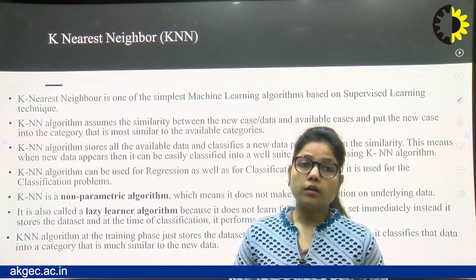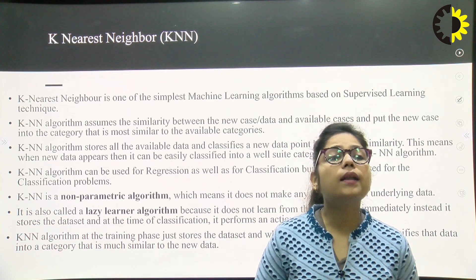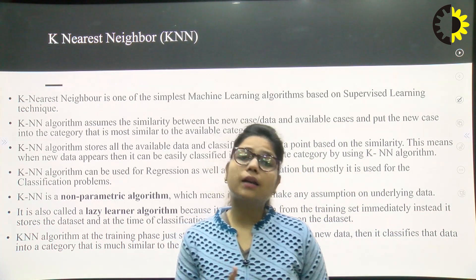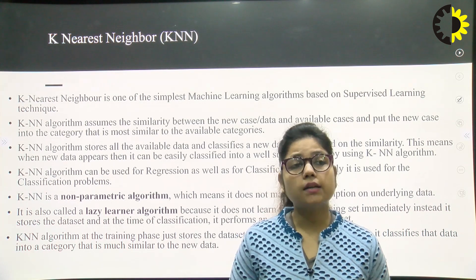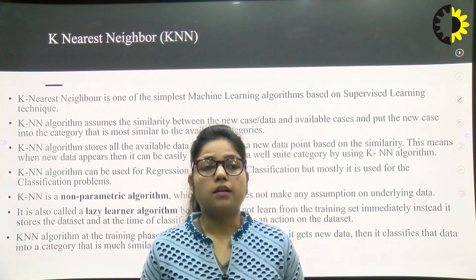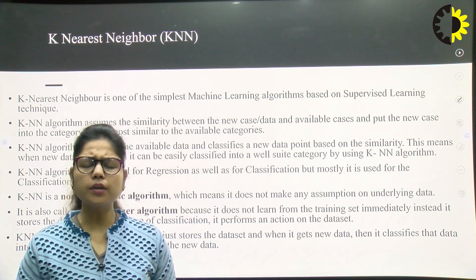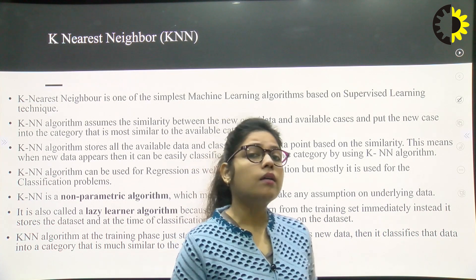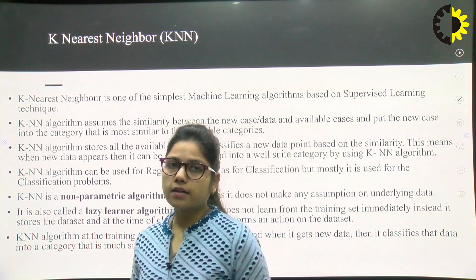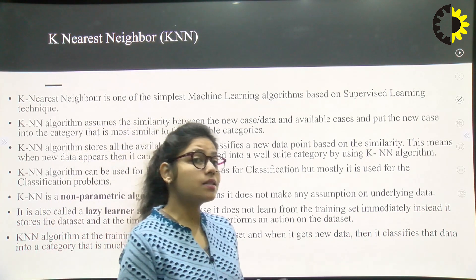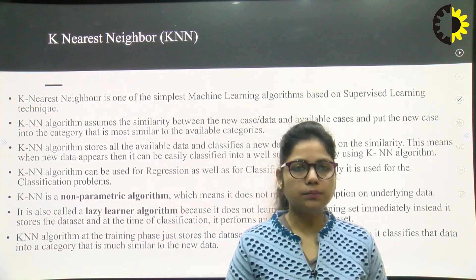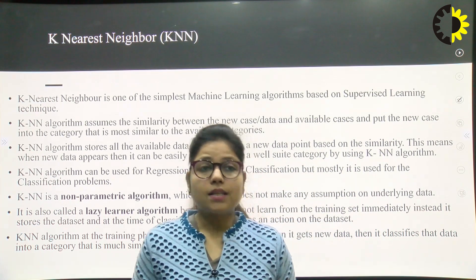KNN is a non-parametric algorithm, which means it does not make any assumptions on the underlying data. It is also called a lazy learner because it does not learn from the training set immediately — instead, it stores the dataset and at the time of classification performs some actions on the dataset. At the training phase, KNN just stores the dataset. We split data into training, testing, and validation — generally 70% for training and 30% for testing.